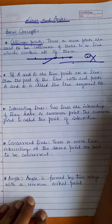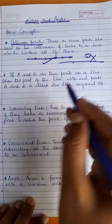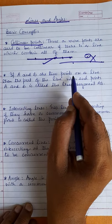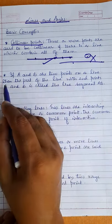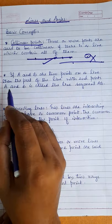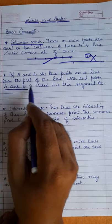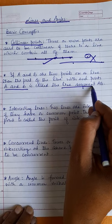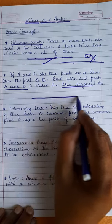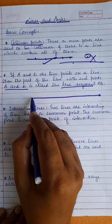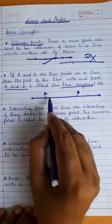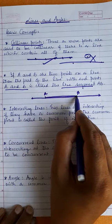Next: if A and B are two points on a line, then the part of the line between points A and B is called the line segment. Suppose this is a line, and this part from point A to point B — this part AB is called the line segment.